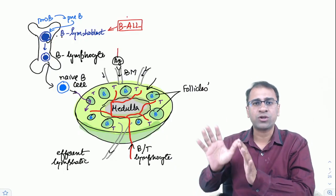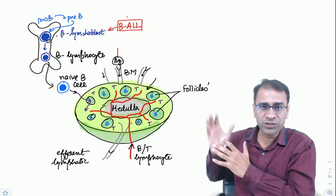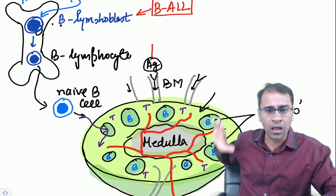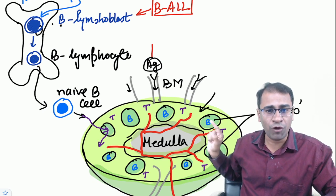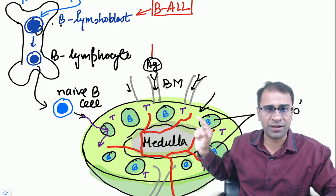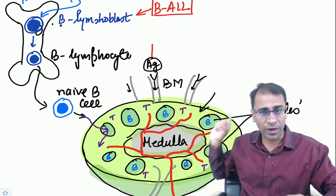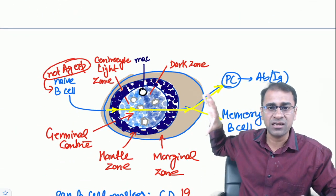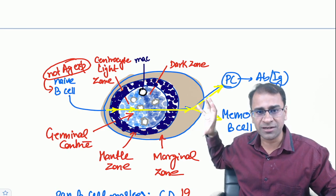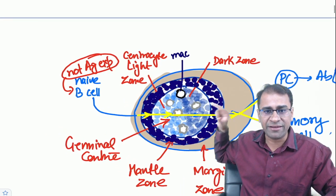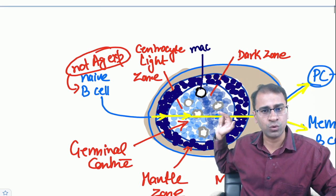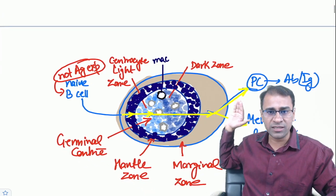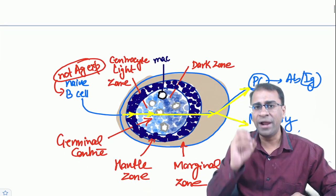We'll start with the origin of lymphomas. In a lymph node you see a cortex and a medulla. In the cortex there is a follicle area and a parafollicular area. Follicles have B cells. Enlarging a single follicle, it has a germinal center with a light zone and dark zone containing centrocytes and centroblasts, then a mantle zone, and outside that a marginal zone.